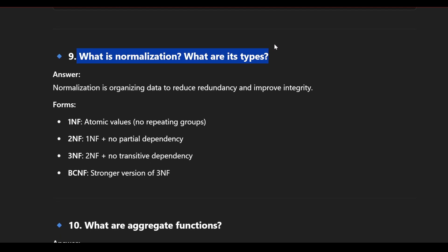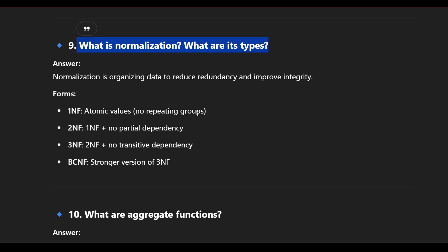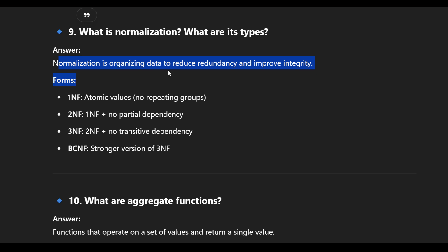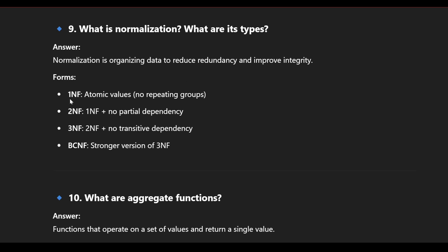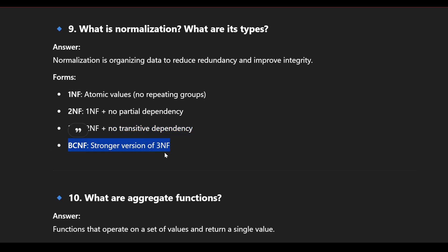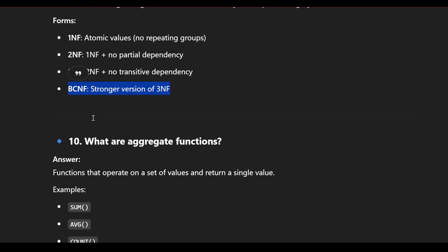What is normalization and its types? Normalization is organizing data to reduce redundancy and improve integrity. The normal forms are: 1NF — atomic values, no repeating groups; 2NF — must be in 1NF with no partial dependency; 3NF — must be in 2NF with no transitive dependency; BCNF — a stronger version of 3NF, applied where 3NF fails. 4NF and 5NF exist but are typically not required.